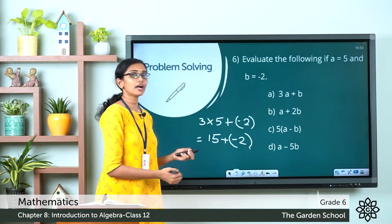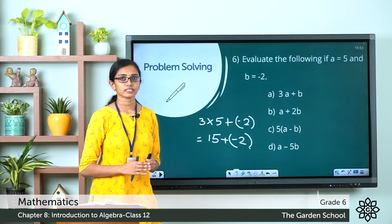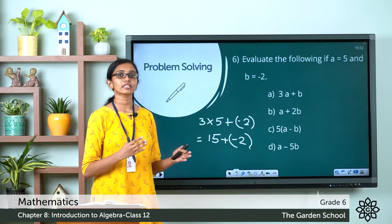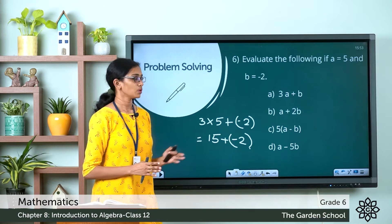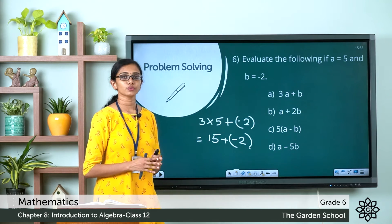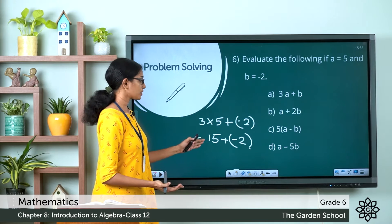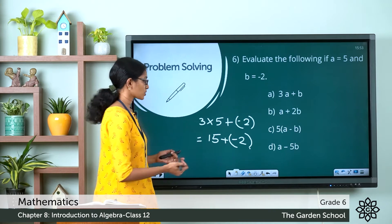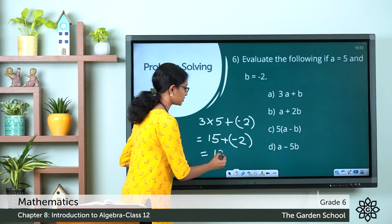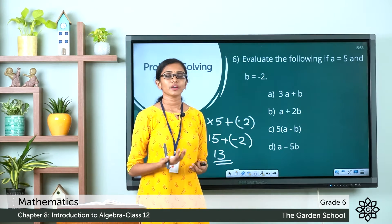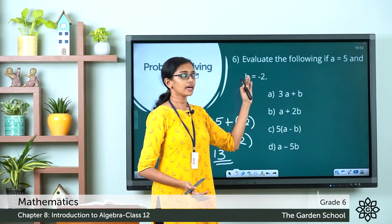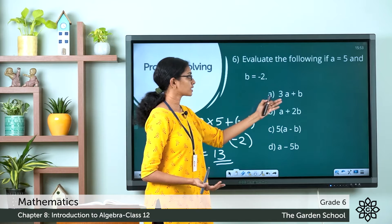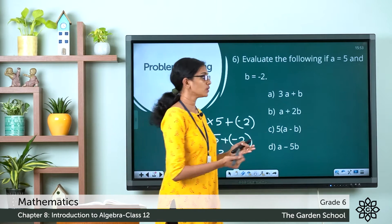We have to add 2 integers with different signs, so we take the difference and put the sign of the integer with more numerical value. 15 plus minus 2 is 13, because 15 has more numerical value and it is positive. So the value of the expression 3a plus b, when a equals 5 and b equals minus 2, is 13.